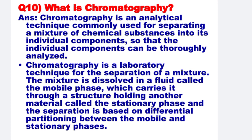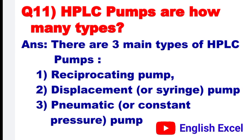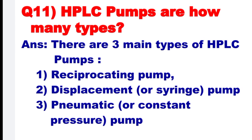The separation is based on the differential partitioning between the mobile and stationary phases. Next: How many types of HPLC pumps are there? There are three main types of HPLC pumps: number one is the reciprocating pump, number two is the displacement pump, and number three is the pneumatic pump.